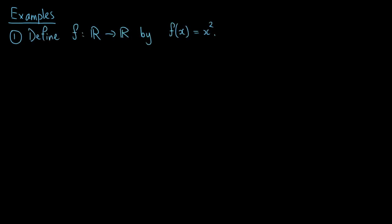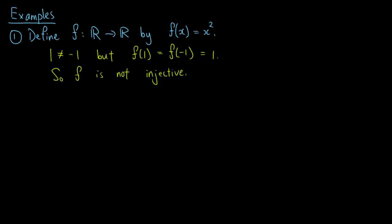Let's consider some examples. Let f be defined from the real numbers to itself by f of x equals x squared. Observe that 1 is not equal to negative 1, but f of 1 equals f of negative 1 equals 1. So we have two different inputs which give the same output, so f is not injective. Also, for all elements x in the reals, f of x is not equal to negative 1, which implies that negative 1 is not in the image of f, so f is not surjective.